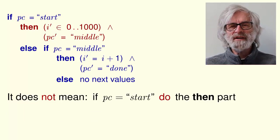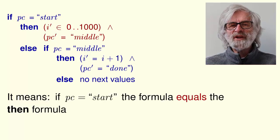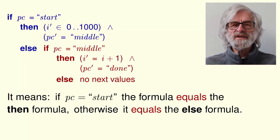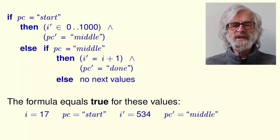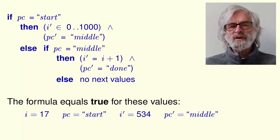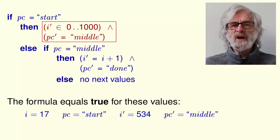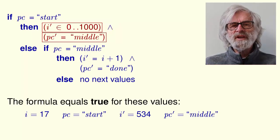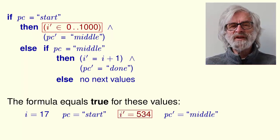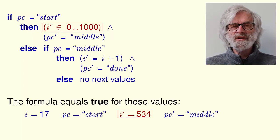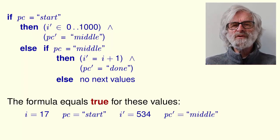This formula does not mean that if PC equals start, then do the then part. Otherwise, do the else part. The formula does mean that if PC equals start, then the value of the formula equals the value of the then formula. Otherwise, its value equals the value of the else formula. The value of the formula equals true for these values of i, PC, i prime, and PC prime, because the if test equals true, because PC equals start. So the value of the formula equals the value of the then clause. This clause equals true if and only if these two formulas equal true. The first formula equals true because i prime equals 534, which is an element of the set of integers from 0 to 1000. The second formula equals true because PC prime equals middle. So the whole formula equals true for these values.